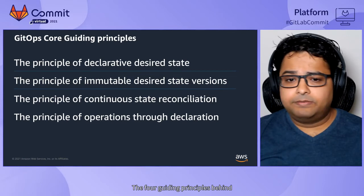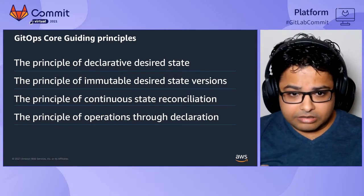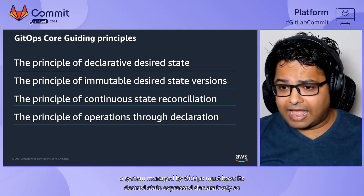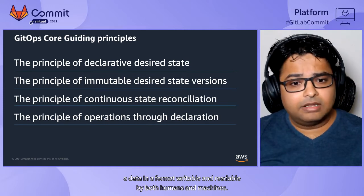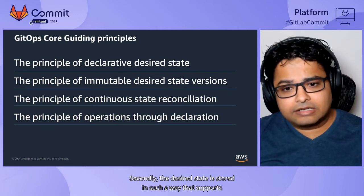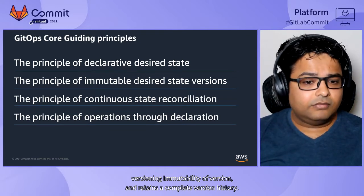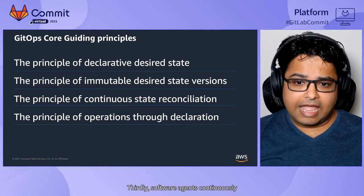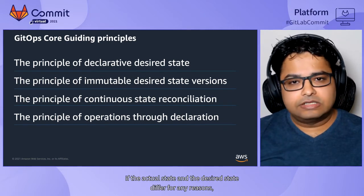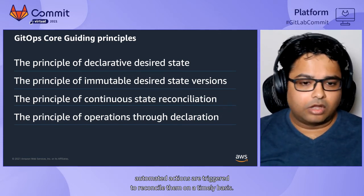The four guiding principles behind creating a GitOps tooling are: first, a system managed by GitOps must have its desired state expressed declaratively as data in a format writable and readable by both humans and machines. Second, the desired state is stored in such a way that supports versioning, immutability of versions, and retains a complete version history. Third, software agents continuously and automatically compare a system's actual state to its desired state — if they differ for any reason, automated actions are triggered to reconcile them on a timely basis.